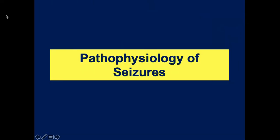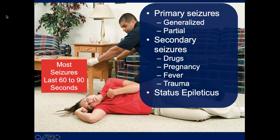Now let's talk about the pathophysiology of seizures. There are two general categories. Primary seizures are the ones people are born with—this is epilepsy. The generalized seizure is the whole body shaking we just described, and there are also partial seizures.